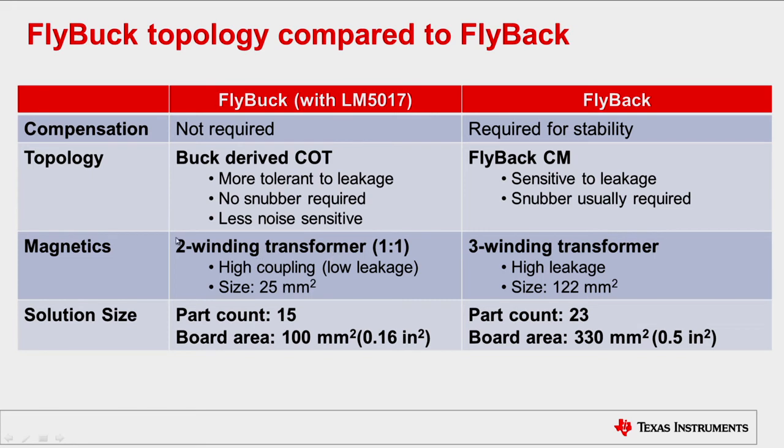The FlyBuck topology requires a 2-winding transformer for 2 outputs, whereas the FlyBack topology requires a 3-winding transformer for 2 outputs. In addition, the FlyBuck topology transformer turns ratios are even, whereas the turns ratios in the FlyBack topologies are very asymmetric, which results in a much smaller magnetics design for FlyBuck compared to the FlyBack topology.